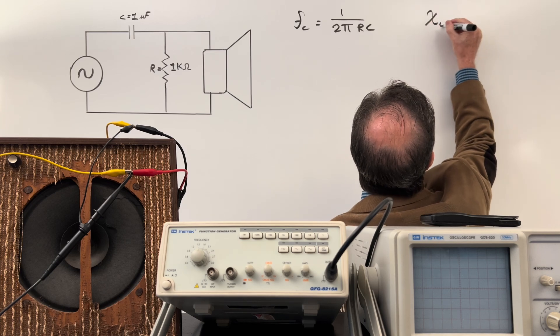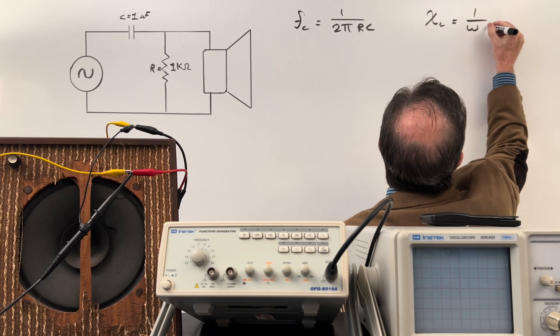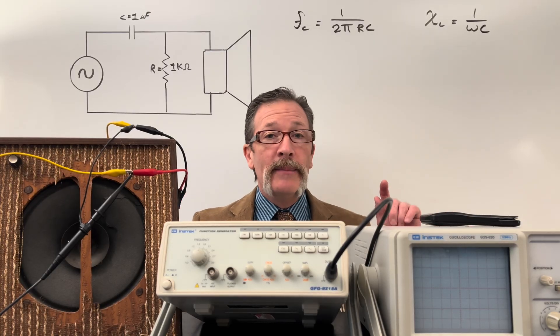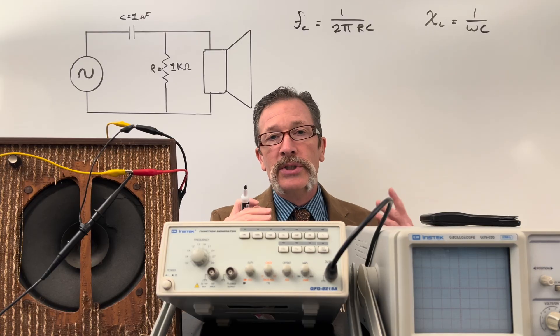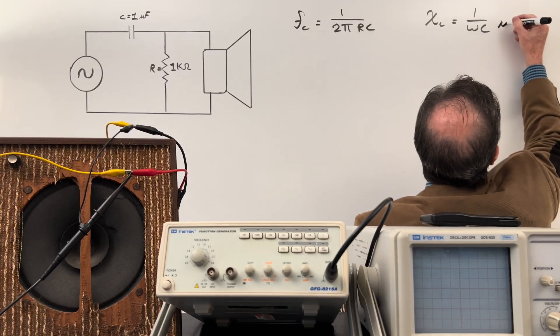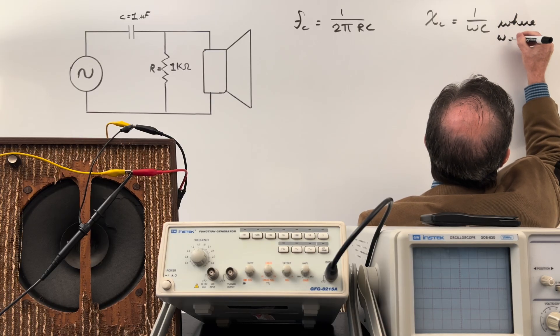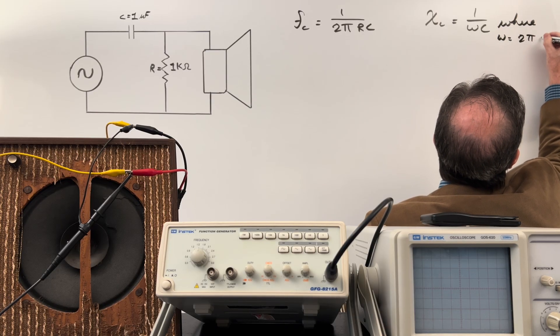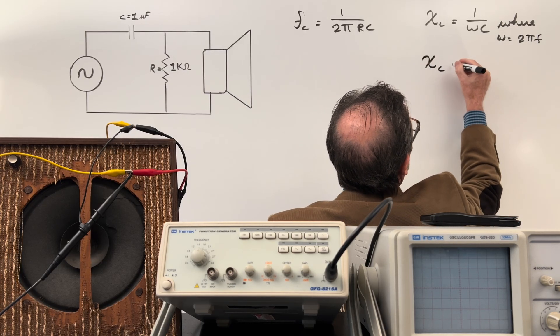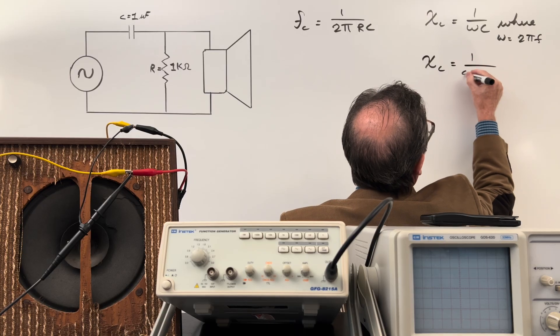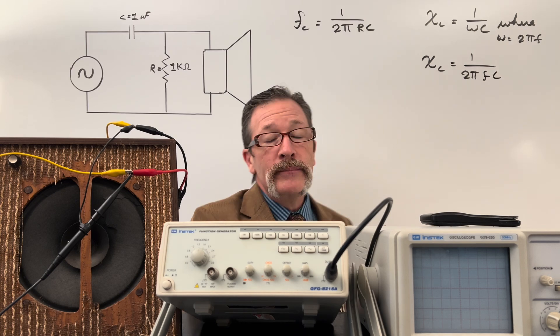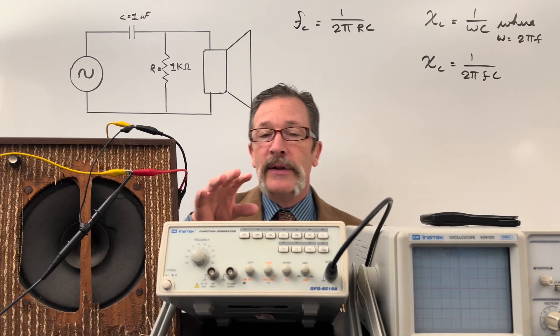A reminder: capacitive reactance is 1 over ωC. They'll instantly say: wait, I think I remember that the omega, the angular frequency, is just 2πf. So I could say where omega equals my 2πf. So I can end up putting Xc equals 1 over 2πfC. And remember we still had the C there.